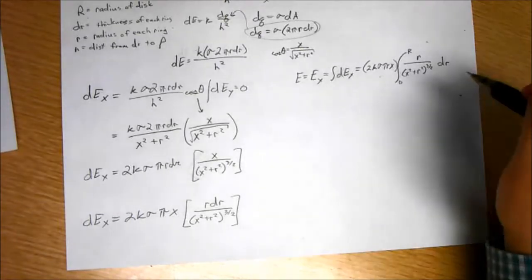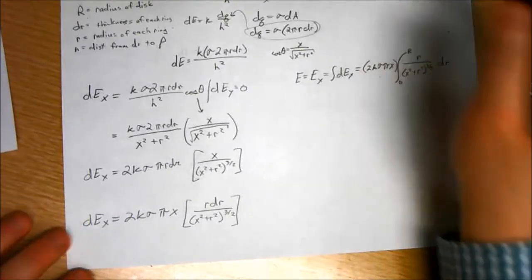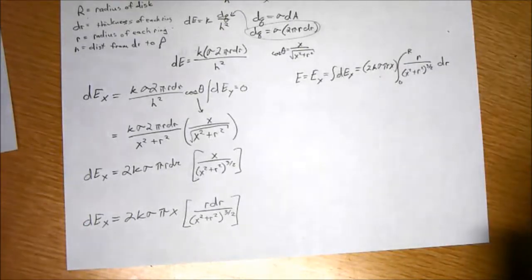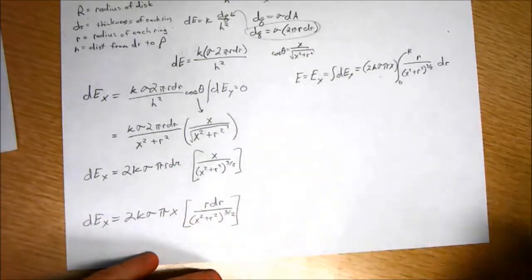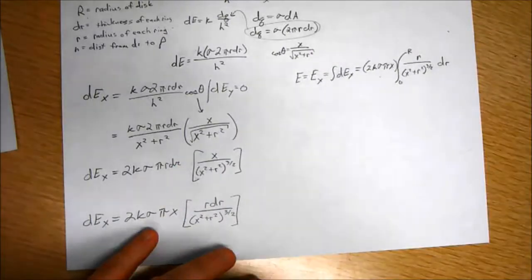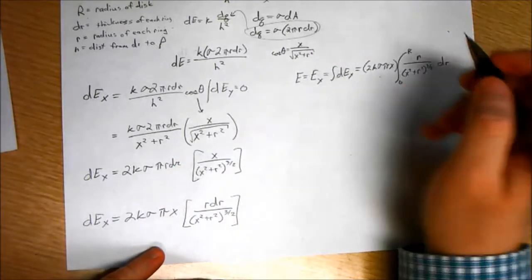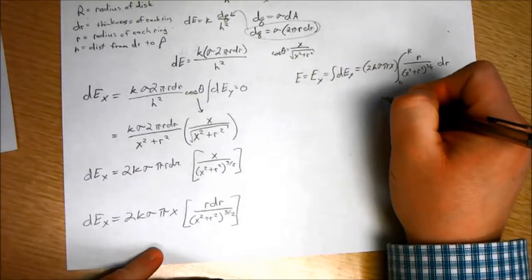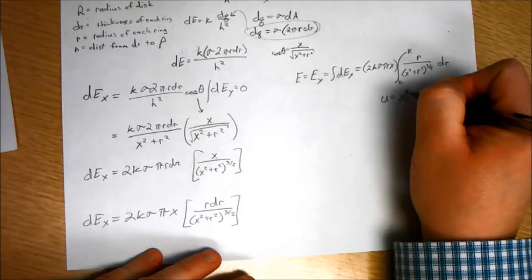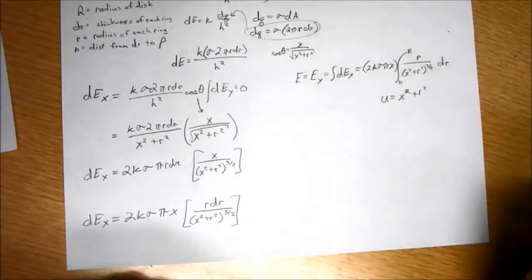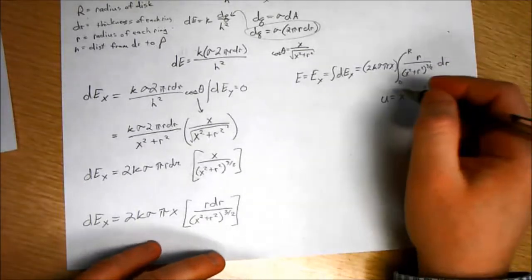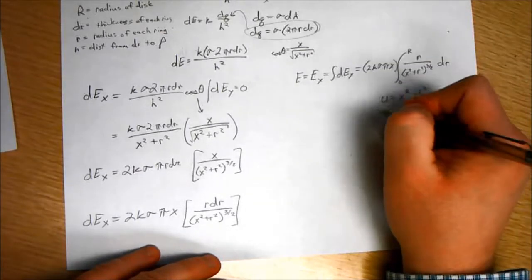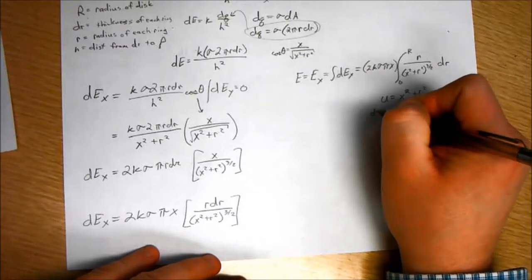So, this is a complicated integral. There's a video that I've posted that's pretty good on U substitution. I would suggest looking at that. But, I'll show you how to do it here. I'm just going to make this substitution that says U equals X squared plus R squared.